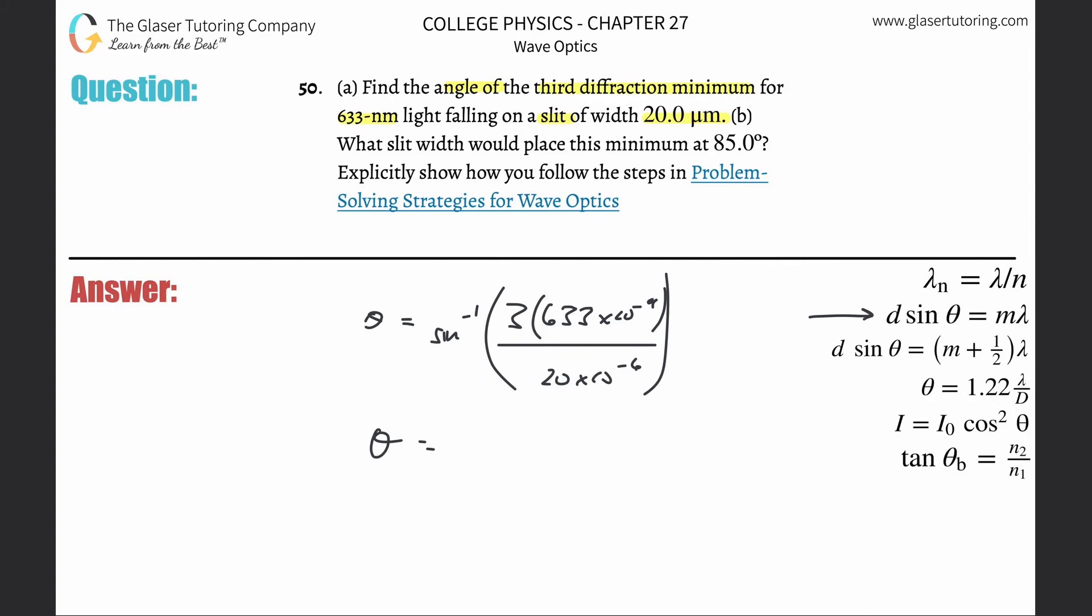Now all you do is take out that handy dandy calculator and make sure it's in degree mode. Otherwise your answer will be in radians. So second sine of three times 633 times 10 to the minus ninth divided by 20 times 10 to the minus sixth. 5.45, so 5.45 degrees. And that's letter a.